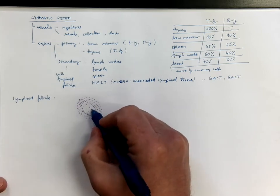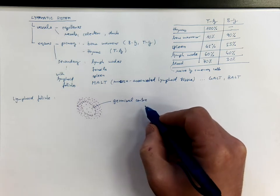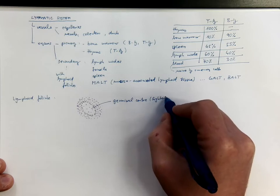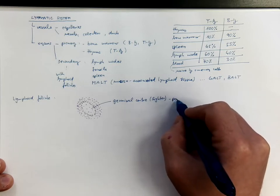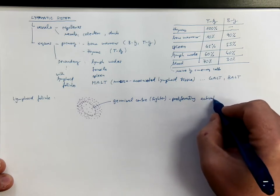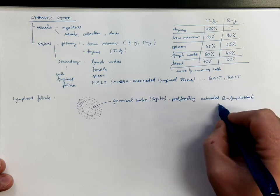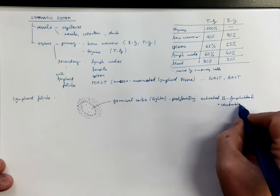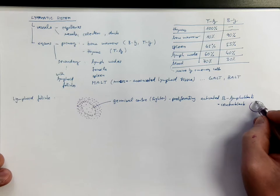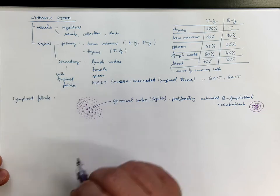So, the center is called germinal center. It's lighter. And it contains proliferating activated B lymphoblasts, also known as centroblasts. Centroblasts have a nucleus with nucleoli, and somehow lighter, a little bit more cytoplasm. And they are occupying more space here, and the density of the cells is smaller.